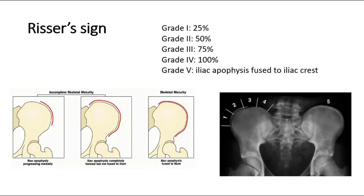The Risser sign is used to measure skeletal maturity, which is important because the curve often progresses most during the period of rapid skeletal growth. After puberty, the iliac apophysis will start ossifying, progressing from lateral to medial. Once the iliac crests are completely ossified, further progression of scoliosis is minimal. The Risser sign is graded 1 to 5: grade 1 is 25% ossification, grade 2 is 50%, grade 3 is 75%, grade 4 is 100% ossification extending medially, and grade 5 is when the iliac apophysis is fused to the iliac crest, indicating full skeletal maturation.